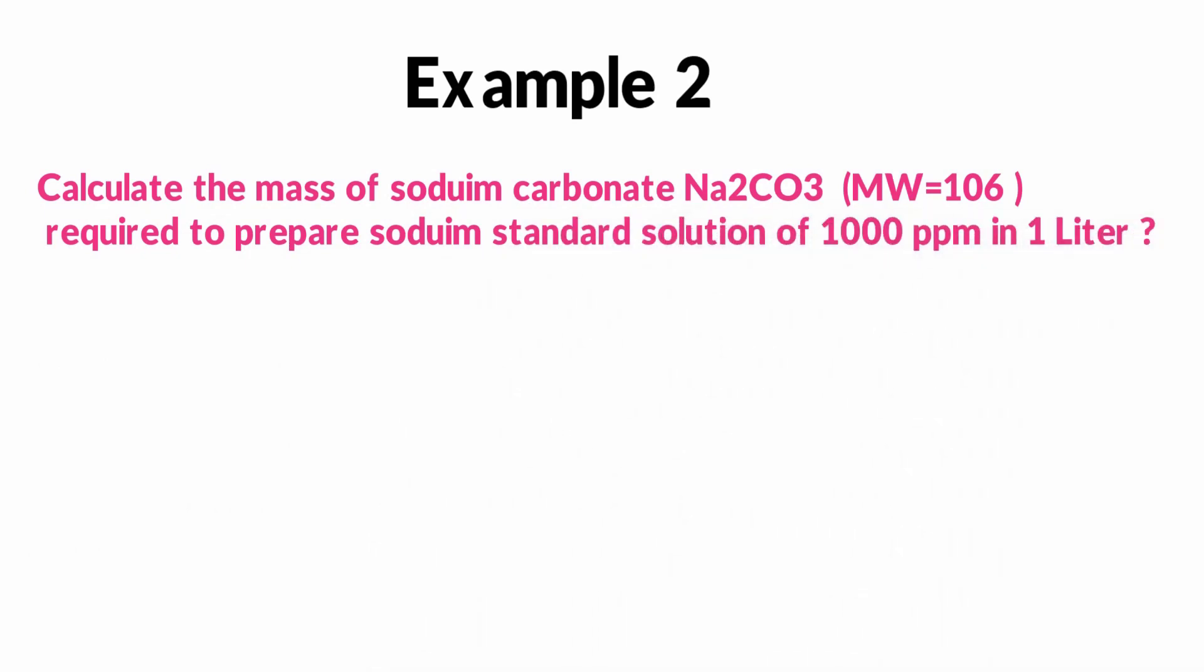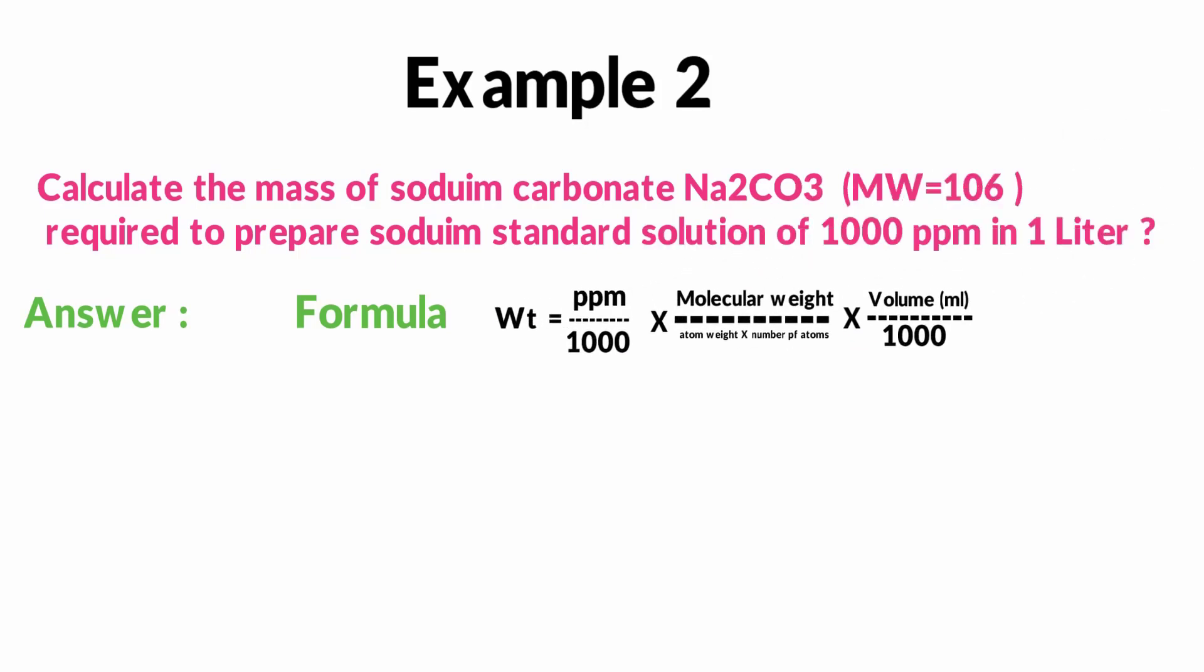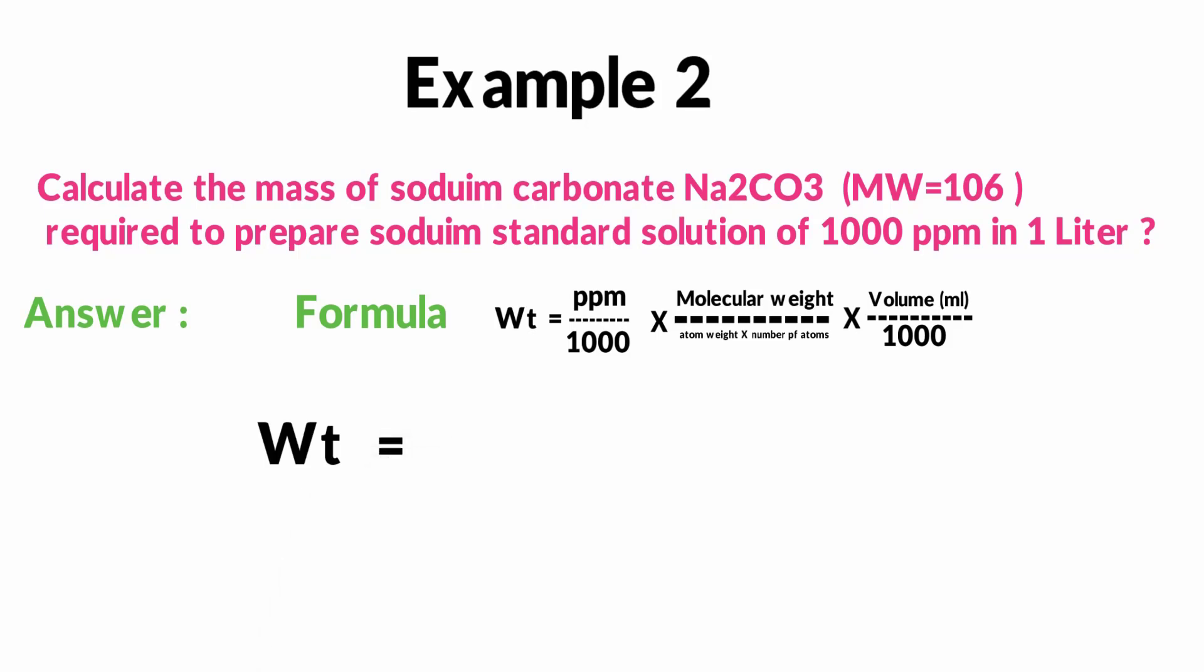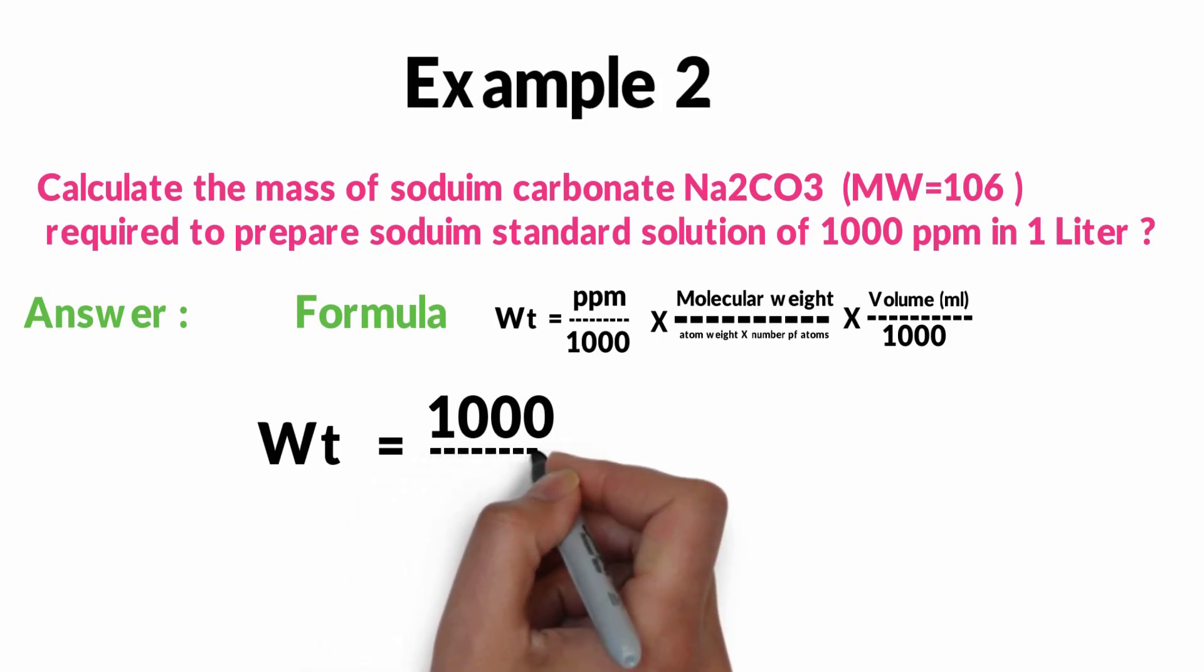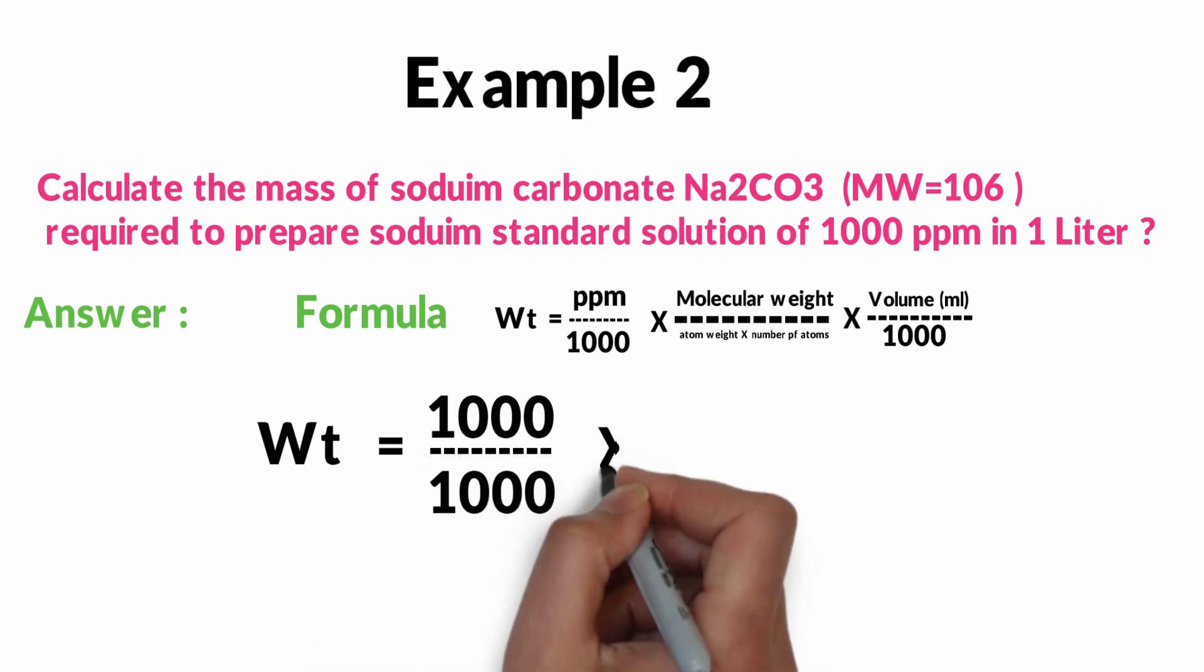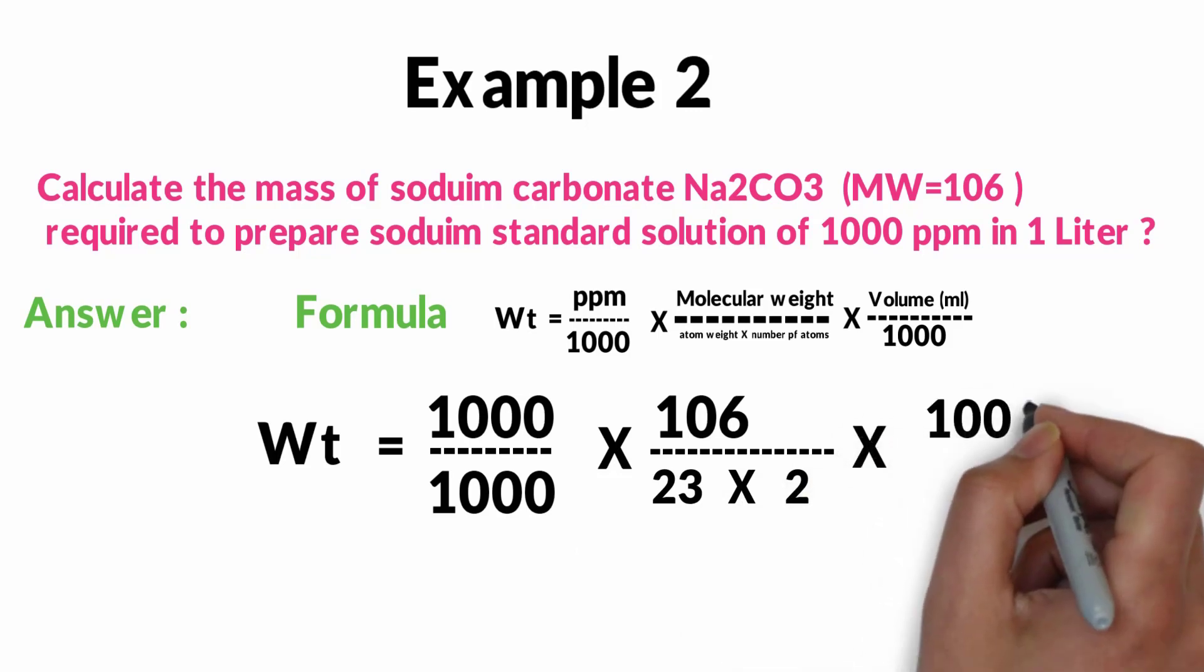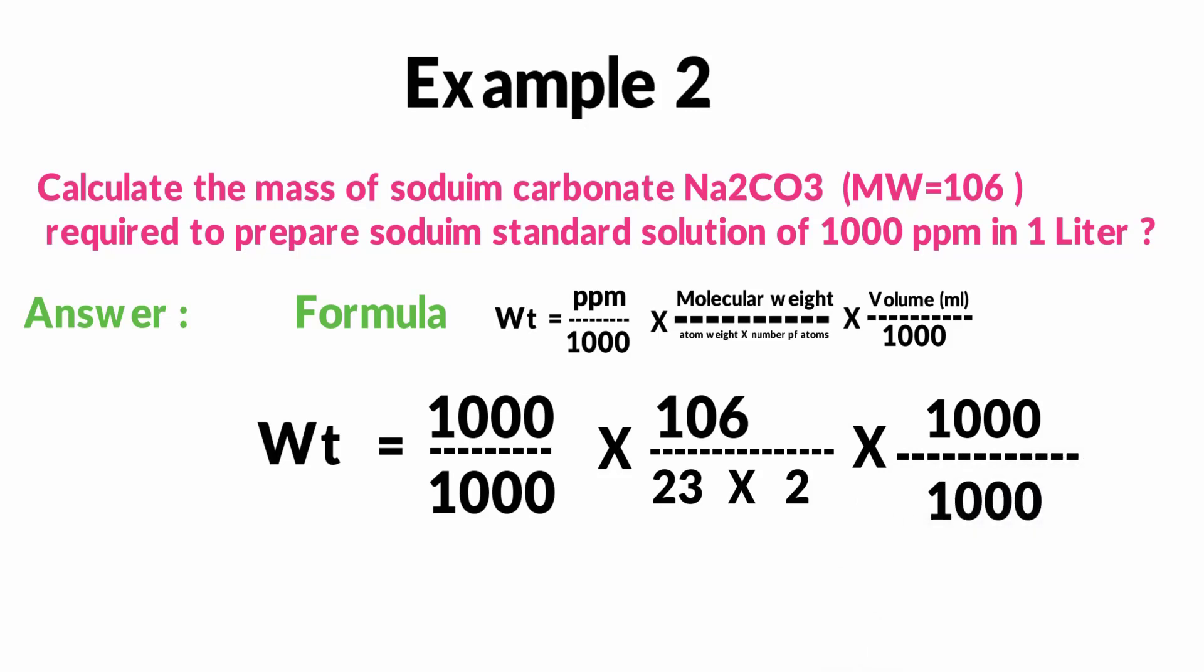Now using the same formula that we started at the beginning of this video to find out the exact amount of sodium carbonate that is needed to have 1000 ppm of sodium standard solution. We go for direct substitution: 1000 divided by 1000 times 106, which is the sodium carbonate molecular weight, divided by 23 times 2, because we have two sodium elements in this formula, times one liter which is 1000 ml divided by 1000. It gives us 2.3 grams at the end of this equation.